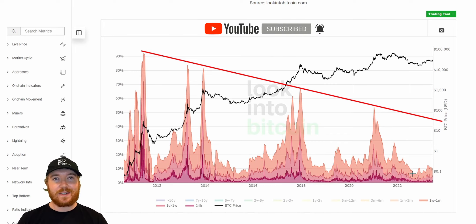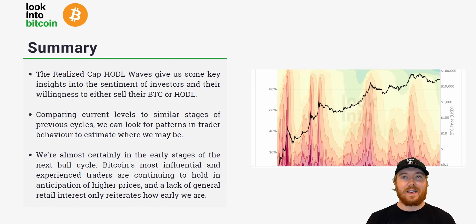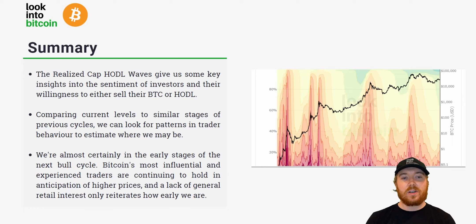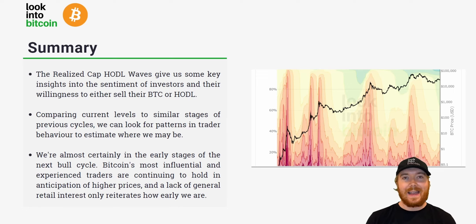To summarize: the Realized Cap HODL Waves give us key insights into investor sentiment and their willingness to either sell their BTC or HODL. When longer-term metrics increase, it indicates people want to hold in anticipation of higher prices. When short-term age bands increase exponentially, it signals people are beginning to sell. Comparing current levels to similar stages of previous cycles, we're almost certainly in the early stages of the next bull cycle, with experienced traders continuing to hold and a lack of general retail interest reiterating how early we are.